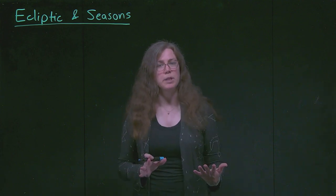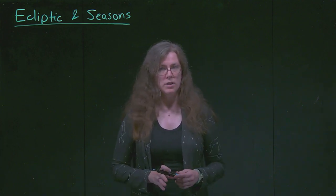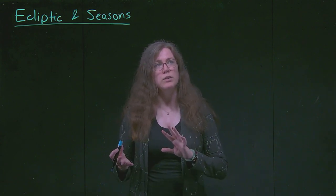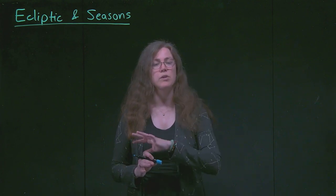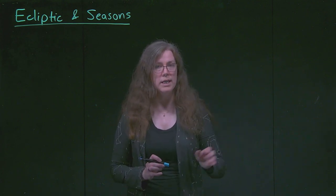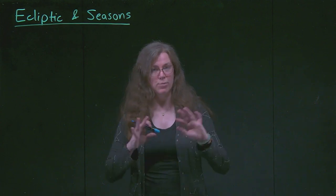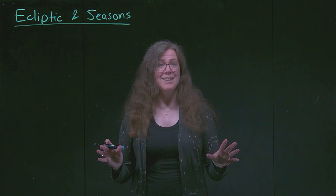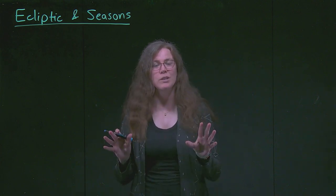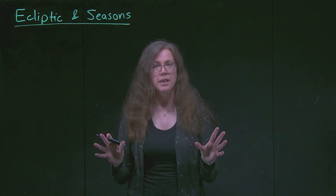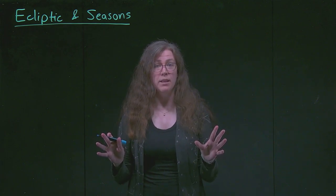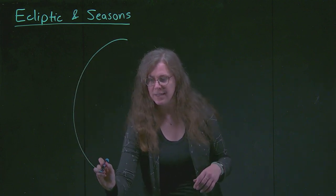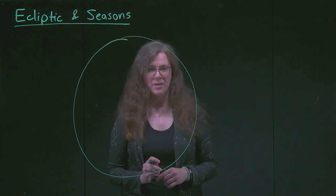When we mentioned the ecliptic briefly in previous videos and materials, we talked about how the ecliptic is something we can describe in a couple of different ways. One of them is the path of the Sun through the sky, and another is the plane of the solar system projected into our sky. What we're going to talk about today is using the plane of this light board — the plane of the solar system — to talk about the ecliptic in that context.